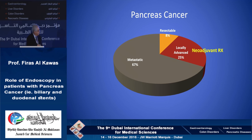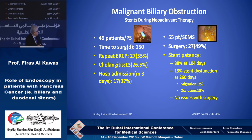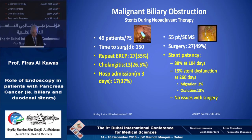There is increasing interest in neoadjuvant therapy in patients with pancreatic cancer. This group of patients requires stenting, and the question was whether to use plastic or metal stents. Data suggests that if you use plastic stents, the risk of complications is much higher — including repeat ERCP, cholangitis, and hospital admissions — while self-expandable metal stents have far fewer complications during neoadjuvant therapy while awaiting surgery.